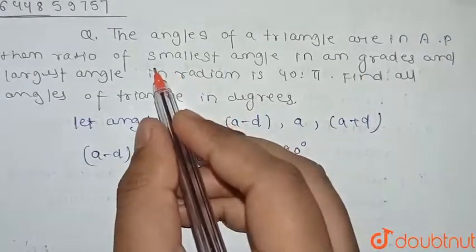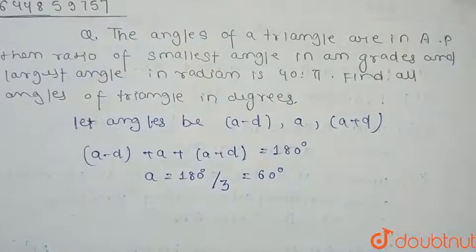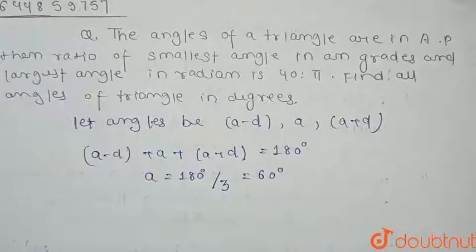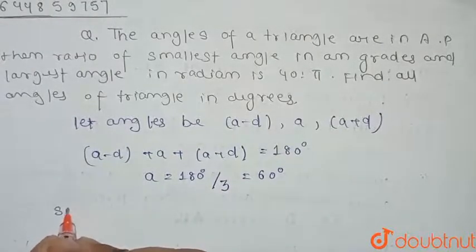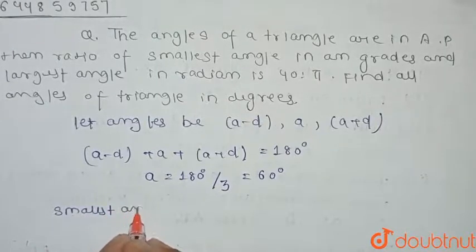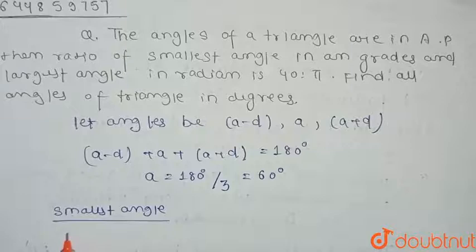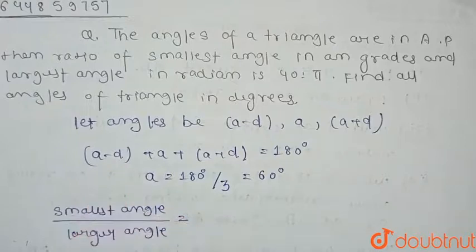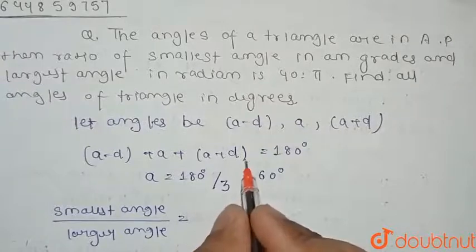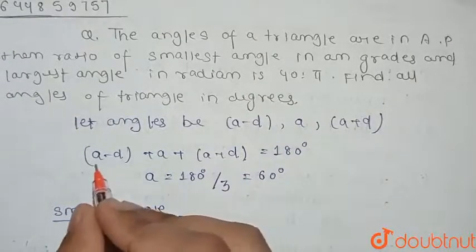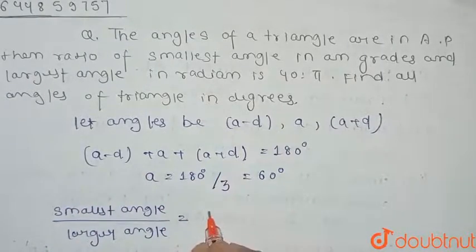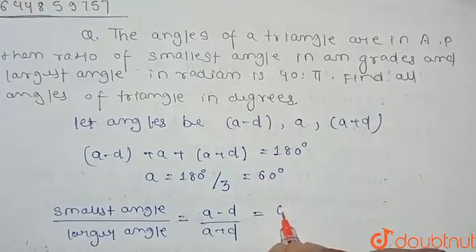Now we use the condition that the ratio of the smallest angle to the largest angle is 40 (in grades) to π (in radians). The smallest angle is a-d and the largest angle is a+d, so we write (a-d)/(a+d) = (60-d)/(60+d).